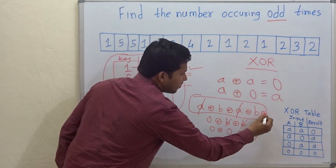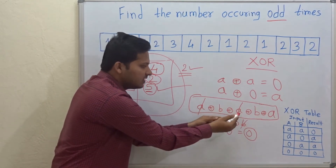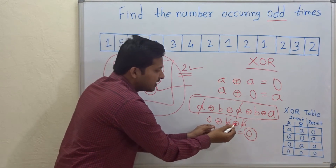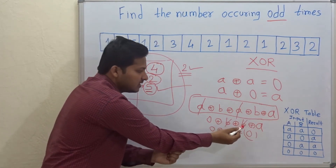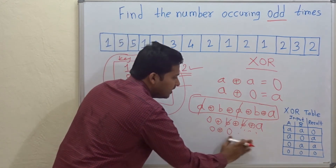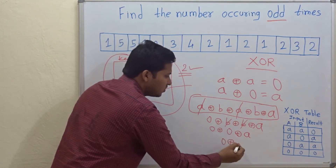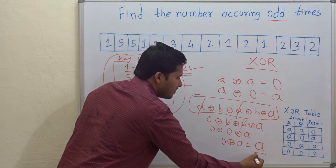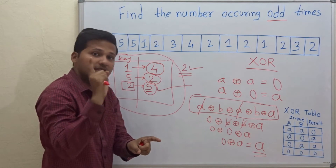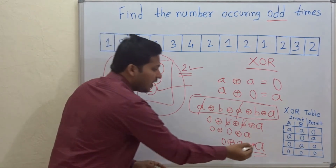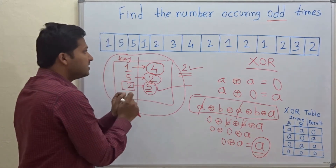Now if I add one more XOR A, then this A will cancel with one of the A's, leaving 0 XOR B XOR B XOR A. Then B cancels with B, giving 0 XOR 0 XOR A. And 0 XOR A equals A. So because A is occurring an odd number of times — 3 times — the final answer is A, the element occurring odd number of times.